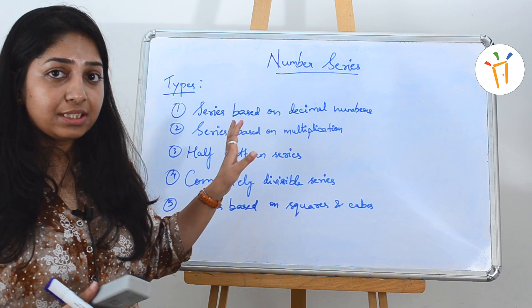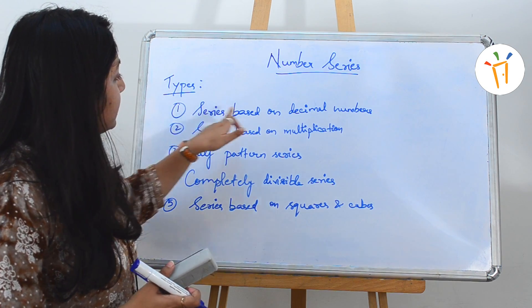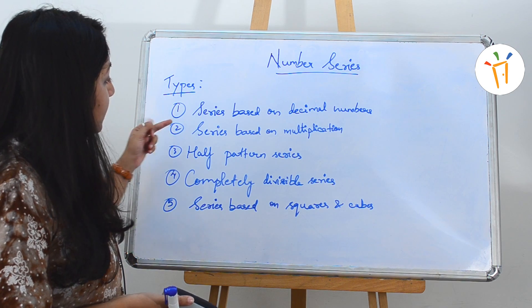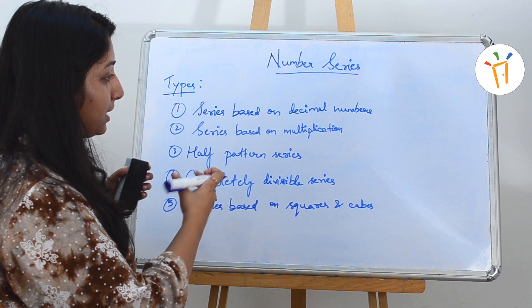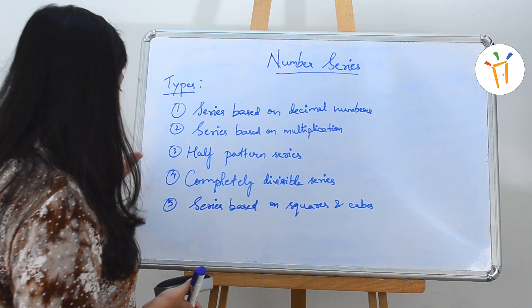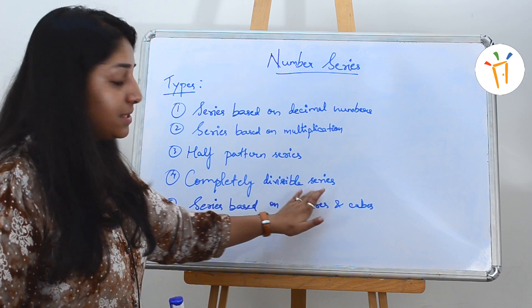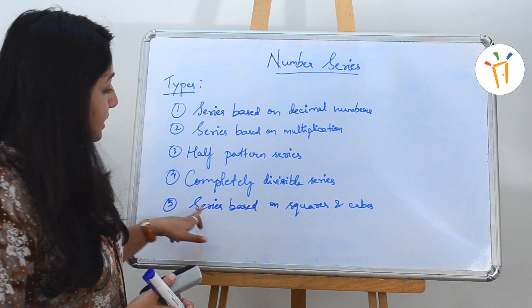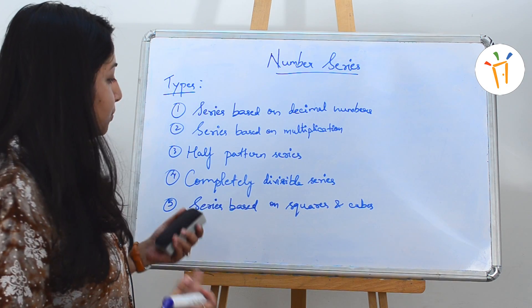The questions in number series are basically divided into five types. The first is the series based on decimal numbers. The second is the series based on multiplication, where the numbers are a multiplication of the number beside it. The third is the half pattern series. The fourth is the completely divisible series, where the numbers are completely divisible to each other. The fifth is the series based on squares and cubes, where the difference is either the square or the cube of the numbers.